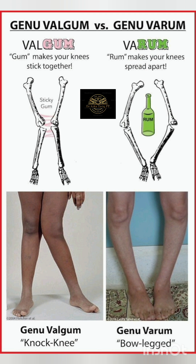To summarize: genu valgum refers to sticky knees, that is knock knee, and genu varum means bow-legged or wide knees.